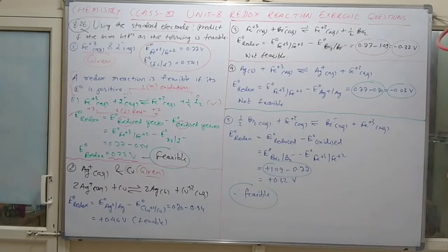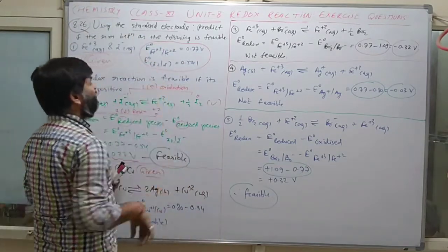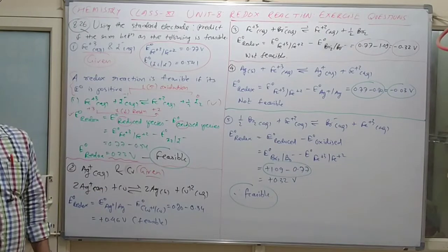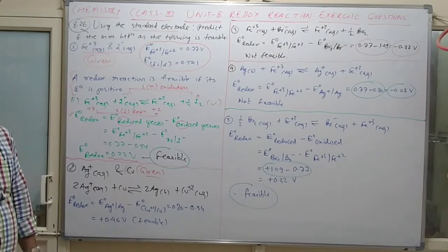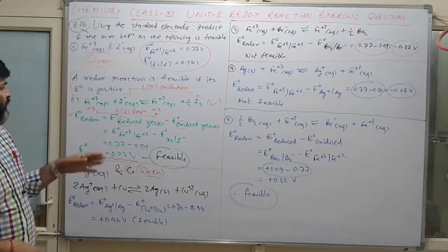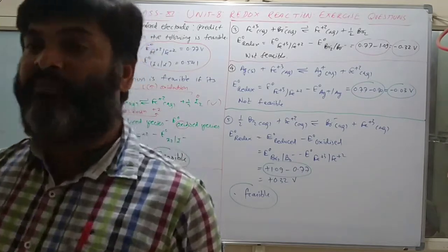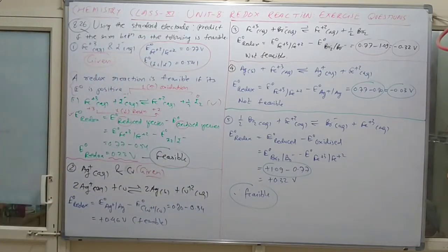To summarize the method: first write the reaction, then apply the formula E° redox = E° reduced − E° oxidized. Remember that E° refers to the standard reduction potential. Based on whether the E cell value is positive or negative, determine if the reaction is possible or not.